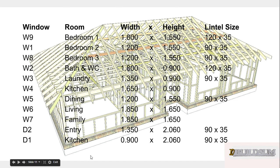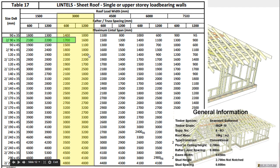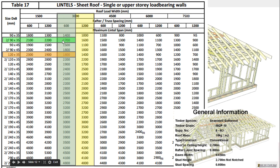The next one is 1650mm. We could use 290×35, but a 90×45 drops down to only 1500mm capacity, so that won't work. The next more efficient option is 1×120×35, which covers up to 1700mm. We could use 290×45, but 120×35 is more efficient, so we'll use 120×35 for the 1650mm opening.